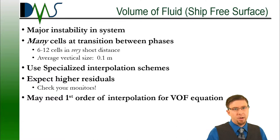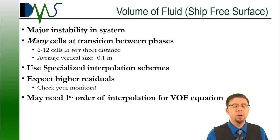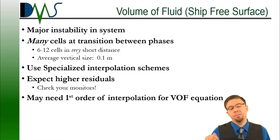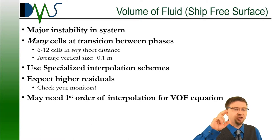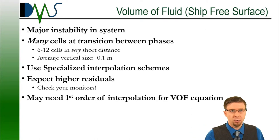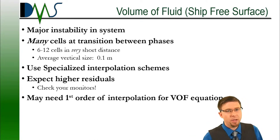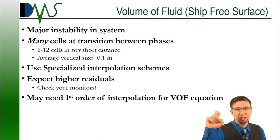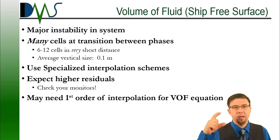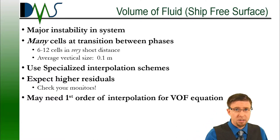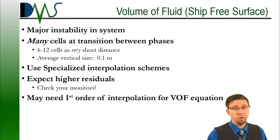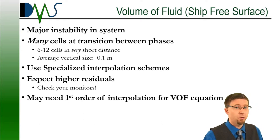Expect all of your residuals are going to be a fair amount higher in your residual plots — that's okay, that's actually quite normal. Depend quite a bit more on your monitor values as a result; the monitor values will be the more reliable element to judge convergence. When it also comes to resolving the free surface, the volume of fluid method has a tendency to smear the transition between fluids. You're not going to get a crisp transition from water to air — it's going to be more of a blended shift. To compress that into a quick change, you need to put a lot of cells at that transition between the phases — somewhere between 6 to 12 cells at that vertical transition zone, compressed into a very short distance. Your average cell size in that section should be about 0.1 meters. And you're going to want to use a specialized interpolation scheme just for your volume fraction — your software package should have a specialized scheme just for that.